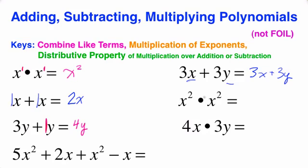x squared times x squared - and again, this is not 2 of something. Using your exponent rules, you have to add these exponents. It is going to be x to the 4th.